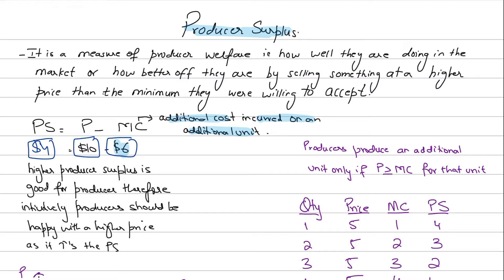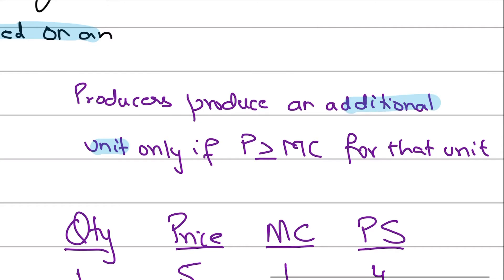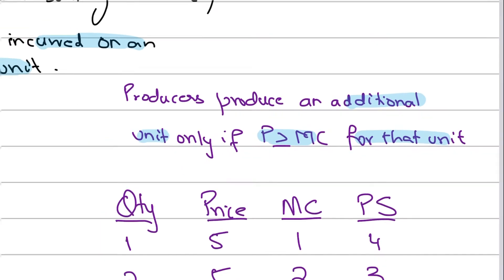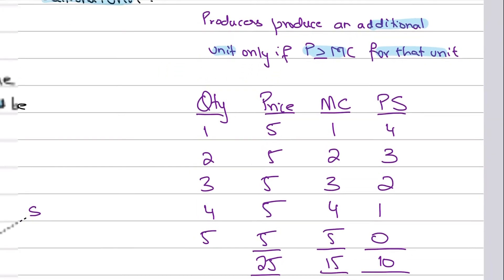The higher the producer surplus, the better it is for the firm, and intuitively producers should be happy with a higher price as it increases their producer surplus. Producers will keep producing an additional unit — that's the rule for allocative efficiency from the producer's perspective — as long as price is greater than or equal to marginal cost. That is a rational decision for producers.